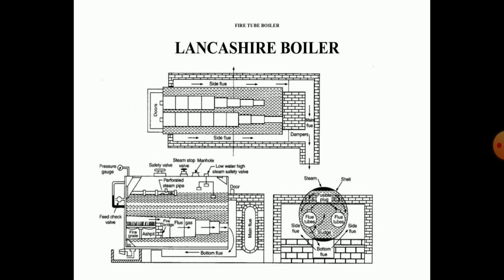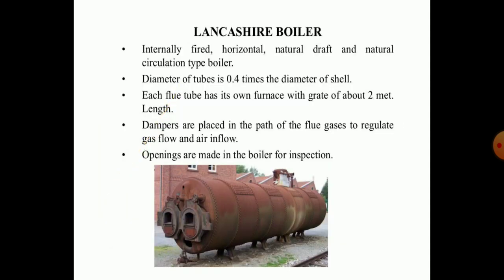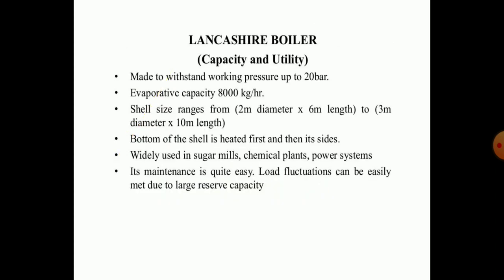You can see the Lancashire boiler and its various parts on screen. The Lancashire boiler is an internally fired, horizontally oriented, natural circulation type boiler. The diameter of the tubes is generally 0.4 times the diameter of the shell, and each flue tube has its own furnace with a grate of about 2 meters in length. Dampers are placed in the path of the flue gases to regulate gas flow, and openings are made into the boiler for inspection purposes. The Lancashire boiler is designed to withstand a working pressure of 20 bar, with an evaporative capacity of about 8000 kg per hour.